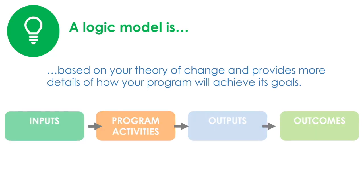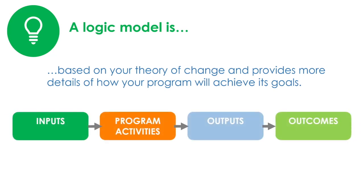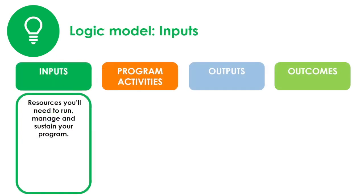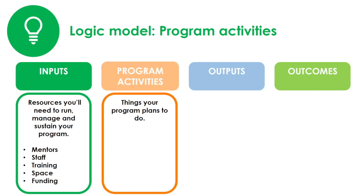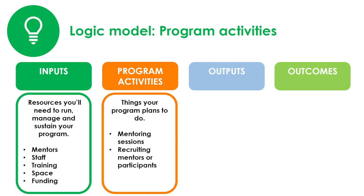Let's review each of the components in a little more detail. Inputs are resources you'll need to run, manage, and sustain your program. For our mentoring example, these include mentors, staff, training, space to hold mentoring sessions, and funding. Program activities are the things your program plans to do. For our mentoring example, these would be mentoring sessions. They could also include things like recruitment of mentors or participants. If they were using an evidence-based program, they would describe it here.